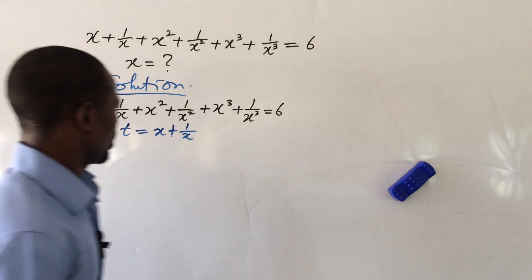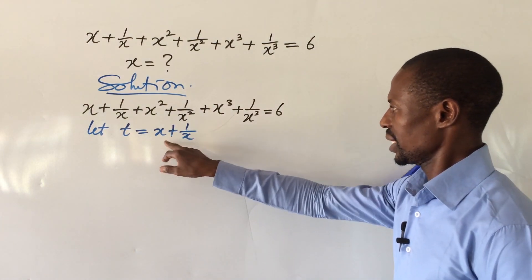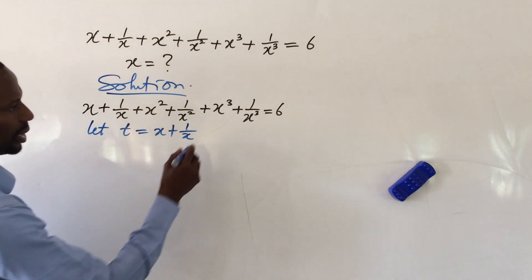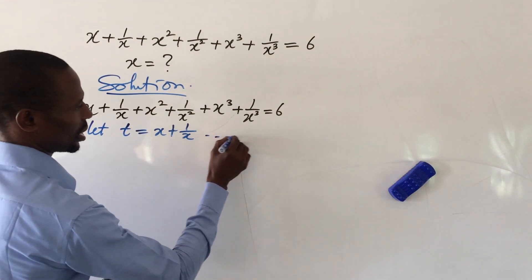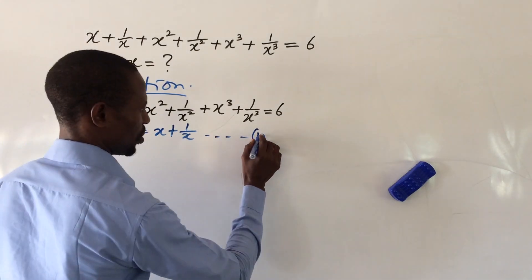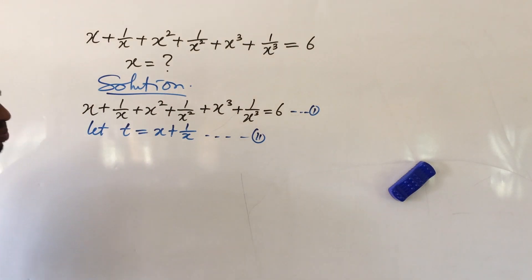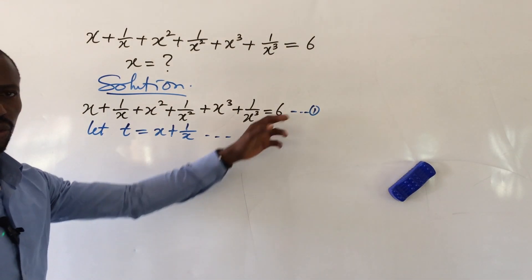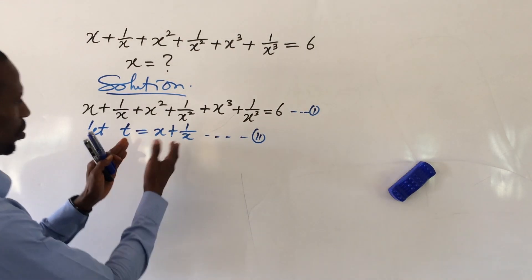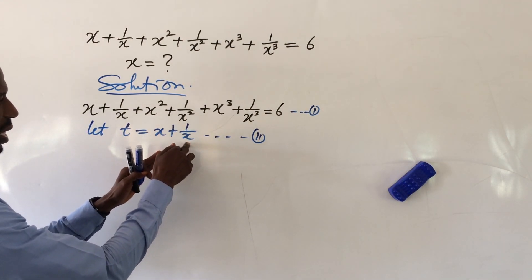If we have this, let's give this a particular number — let's call the original equation Equation 1 and call t = x + 1/x Equation 2 — because we'll be making reference to these two equations. From Equation 2 we have t = x + 1/x already.